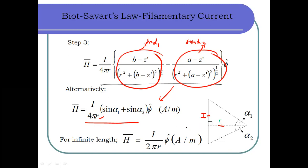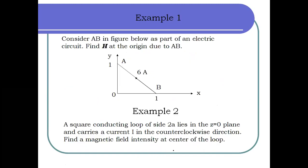If the filament current is extended to infinite length in both directions, then α₁ and α₂ both approach 90°. Since sin 90° = 1, the equation simplifies to H = I/(2πR) φ̂. This is the H field equation for an infinite length filament current.